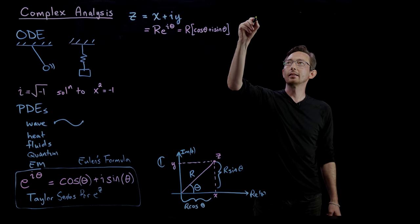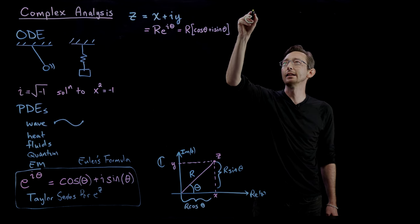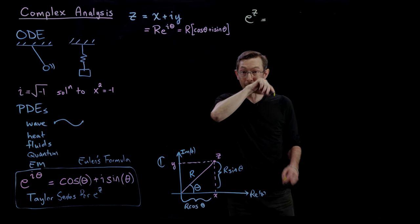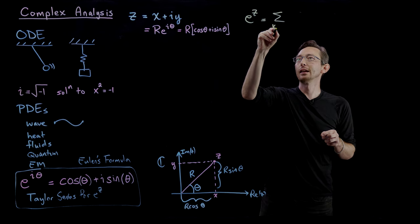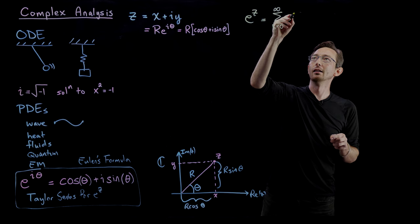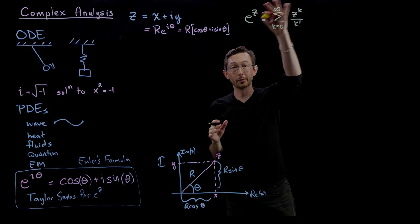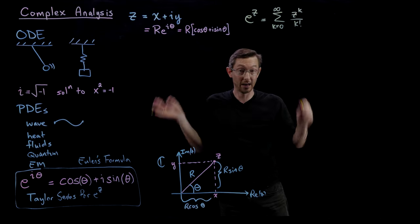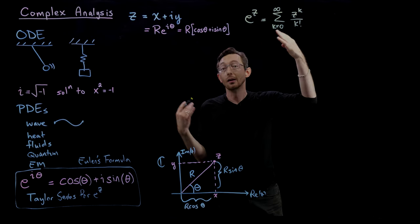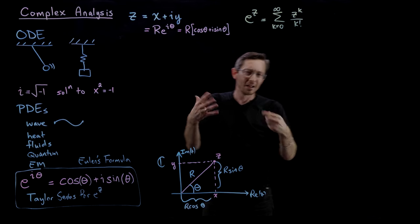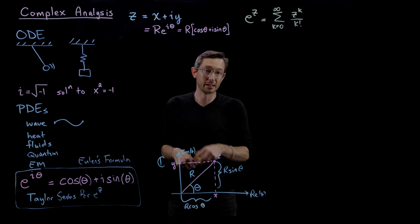We're going to take the Taylor series for e to the z, which can be written as the sum from k equals zero to infinity of z to the power k divided by k factorial. This is a really efficient way of writing down the Taylor series of the exponential function. This is true for the real exponential, but it's also true for the complex exponential.